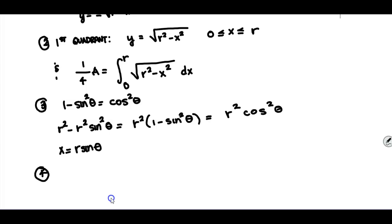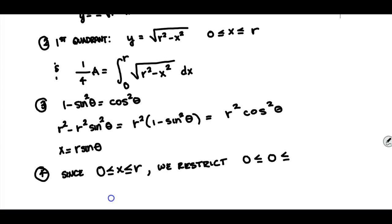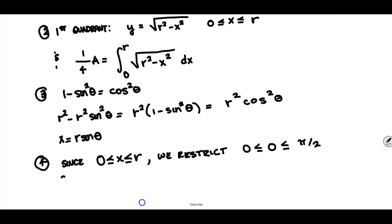Since we know there is a restriction on x from 0 to r, we also have to restrict theta. Restricting theta means θ is between 0 and π/2, which is 90 degrees. Therefore dx equals r cosθ dθ.